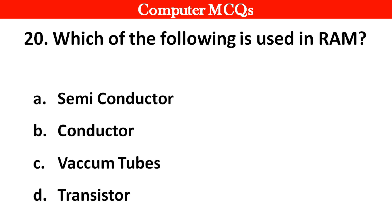Next question. Which of the following is used in RAM? Options A: Semiconductors, B: Conductors, C: Vacuum tubes, D: Transistors. Right answer is option A: Semiconductors.